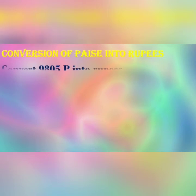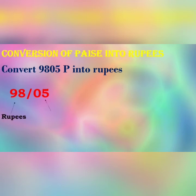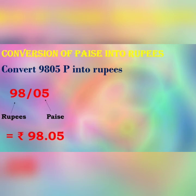Conversion of Paise into Rupees. Our question is: Convert 9,805 Paise into Rupees. First of all, write the symbol of Rupees and put a point after 2 digits from the right. Our answer is Rupees 98.05.